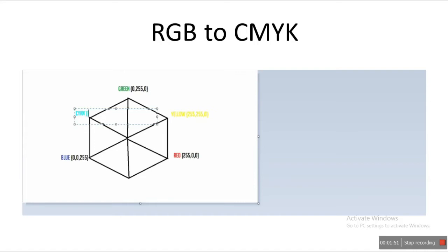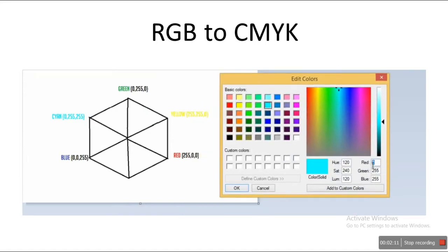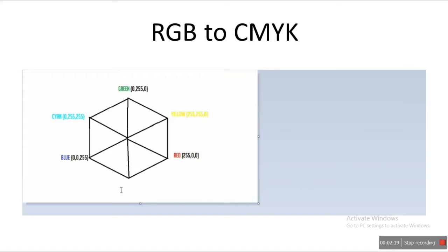So cyan is: red is 0, blue is 255, and green is 255 — so 0, 255, 255. Now we'll add red and blue. So let's take red equal to 255, green equal to 0 because there is no green, and blue equal to 255 — we get our magenta. So magenta is 255, 0, 255.